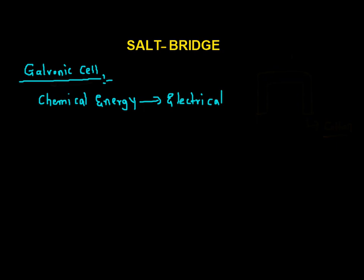So in a galvanic cell, the chemical energy is converted into electrical energy. Let's talk about the simple electrochemical cell.